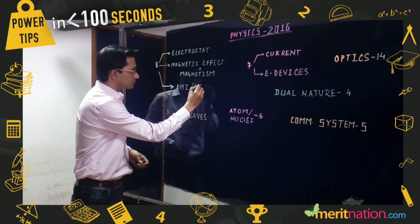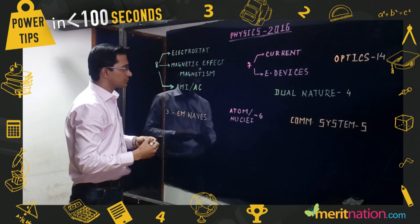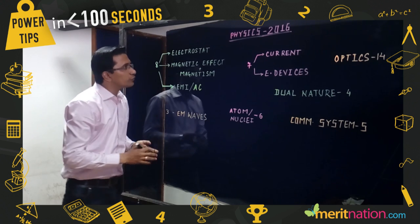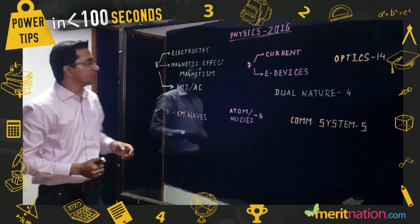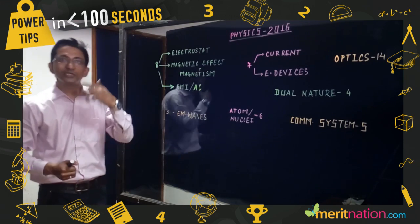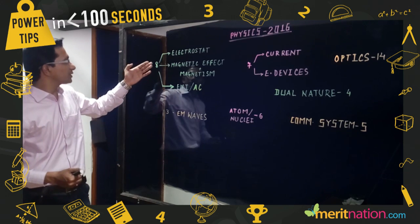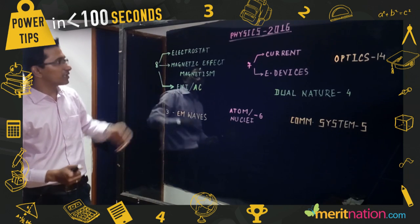What is the marking scheme and the important topics that might come in the physics board exam? When you talk about the physics paper, these numbers 8, 7, 14 all represent marks which are allocated to different sections. These are three topics of 8 marks each, so that accounts for 24 marks.